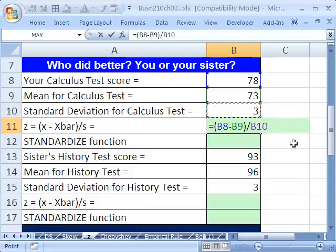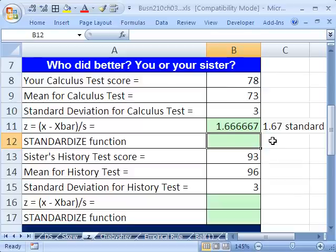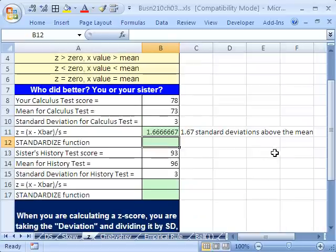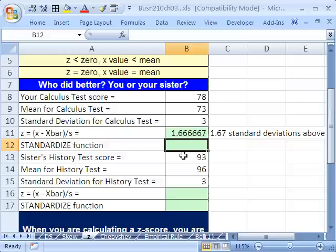That means when we do our calculation, in the denominator will be a 1. So on the top, it'll tell us how many standard deviations we are above or below. Well, of course, because this is above, we're going to get a positive number, which is 1.667. 1.67 standard deviations above the mean.